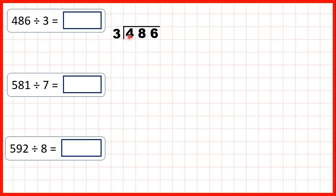The closest number to 4 in the 3 times table is 3, and because 3 is 1 times 3 we write 1 in our answer. But 1 times 3 is 3 and we need to add 1 to get to 4, so our remainder is 1 and we can write the remainder in front of the next digit.